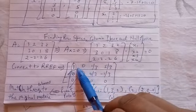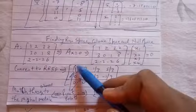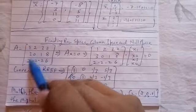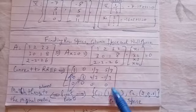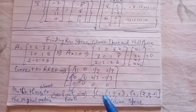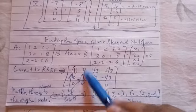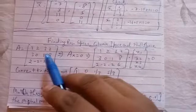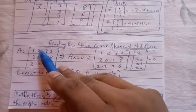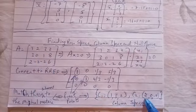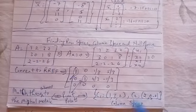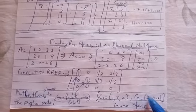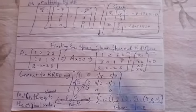Match them to the original matrix. Column number 1 of the RREF matches to column number 1 of the original matrix, which is 1, 3, and 2. Therefore C1, column space 1, is [1, 3, 2]. The second pivot point is column number 2, which matches to column number 2 of the original matrix: 2, 0, minus 2. Therefore the column space is C1 = [1, 3, 2] and C2 = [2, 0, minus 2].